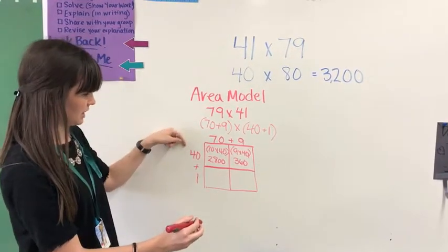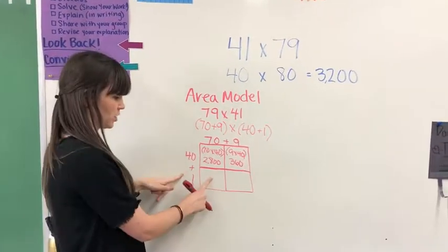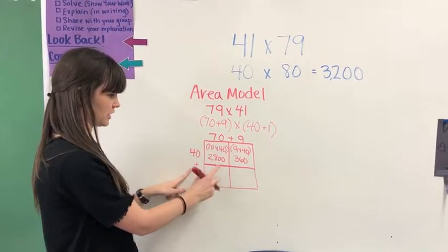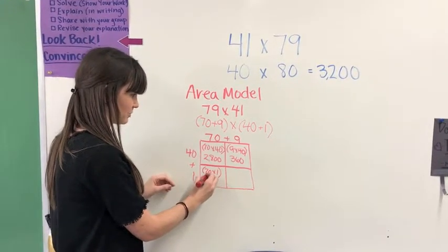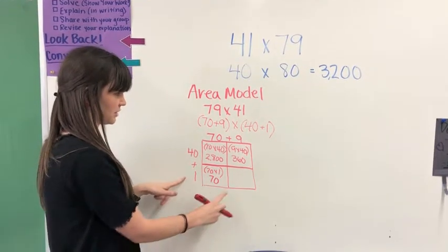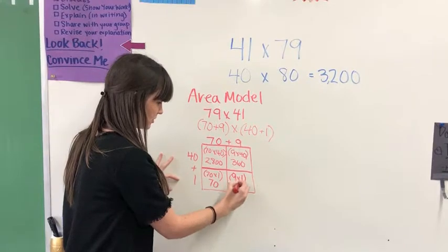Now I'm done multiplying with the 40. I'm going to multiply by the 1. The 1 is going to be multiplied 2 times, 1 in each box. The first equation is going to be 70 times 1. 70 times 1 is 70. The second equation is going to be 9 times 1, which is going to be 9.